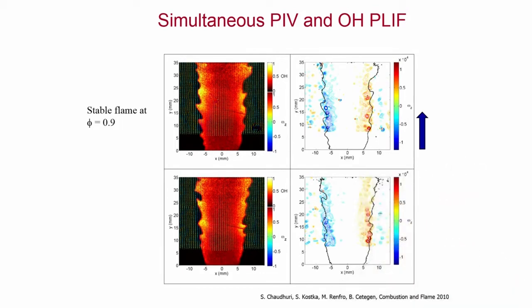For that, we did simultaneous PIV and PLIF for two cases: one for a stable flame far from blow-off and one for an unstable flame near blow-off. For the stable flame, the flame shows wrinkles due to Kelvin-Helmholtz vortices — positive and negative vorticity on each side — and a very sharp flame boundary is formed.